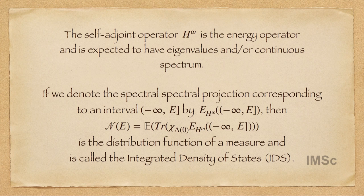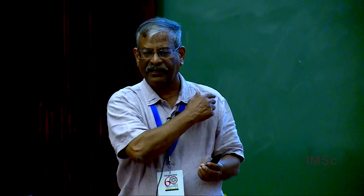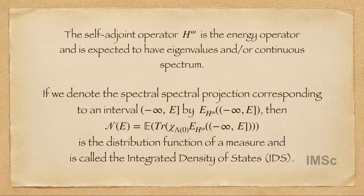Whenever you have a self-adjoint operator, you have a spectral projection associated with it. If you do not understand it, just think of the operator as a matrix, a Hermitian matrix or symmetric matrix. It has eigenvalues. Eigenprojections are there corresponding to the eigenvalues. The diagonal matrix that you get after diagonalizing it is sum of lambda_i P_i, where P_i are the spectral projections. When you do not have eigenvalues but you have other kinds of spectrum, you have a spectral measure. For any interval like minus infinity to E, you can associate a spectral orthogonal projection associated with the self-adjoint operator.